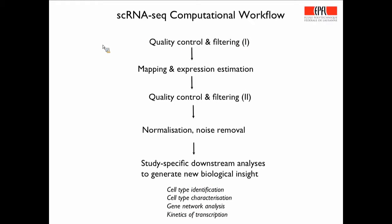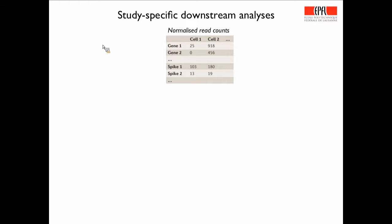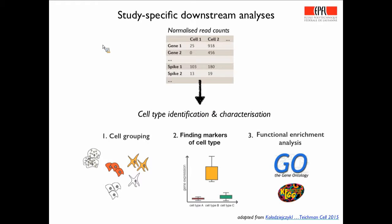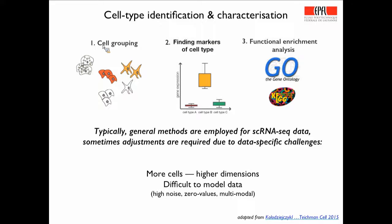Assuming you did a great job removing technical variation and noise, what you now really want to do is look for biology in your data — identify and characterize cell types, do gene network analysis, and so forth. You have your worked-out normalized count matrix, so what can you do? We can categorize this into three types of analyses: cell grouping, finding markers or cell types, and functional enrichment analysis. Let me first focus on cell grouping.